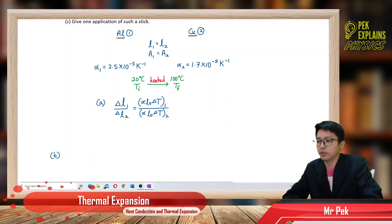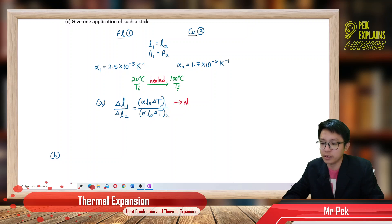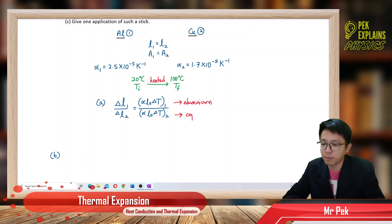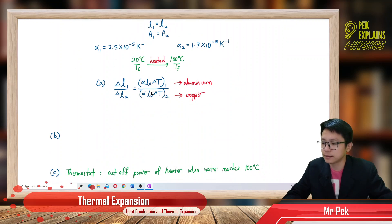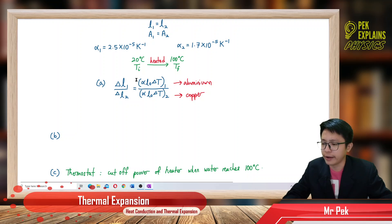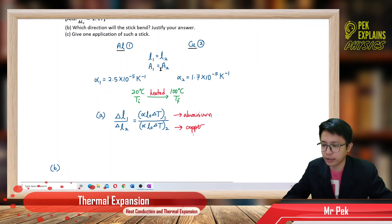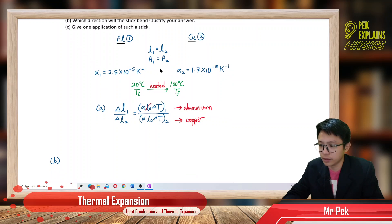Number one is aluminum, so the top is delta L1, the expansion for aluminum, and the bottom delta L2 is the expansion for copper. I put in the values for alpha — alpha 1 and alpha 2. Since the initial length is the same, L1 equals L2, I can cancel out the initial length, as they have the same initial length.